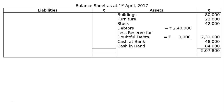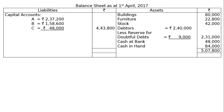The total assets come to rupees 5,57,800. On the liabilities side: capital account of A rupees 2,37,200, B rupees 1,58,600, C rupees 48,000 — totalling rupees 4,43,800 — and creditors rupees 64,000. The total liabilities side is rupees 5,57,800, and this is the final answer.